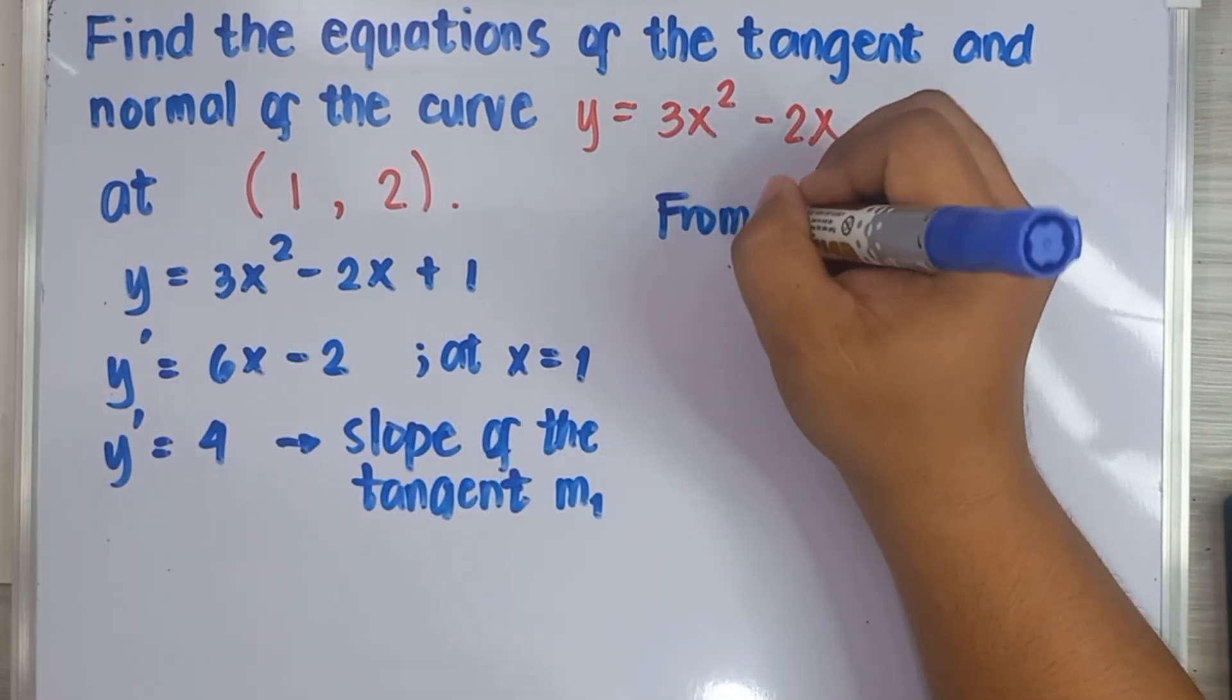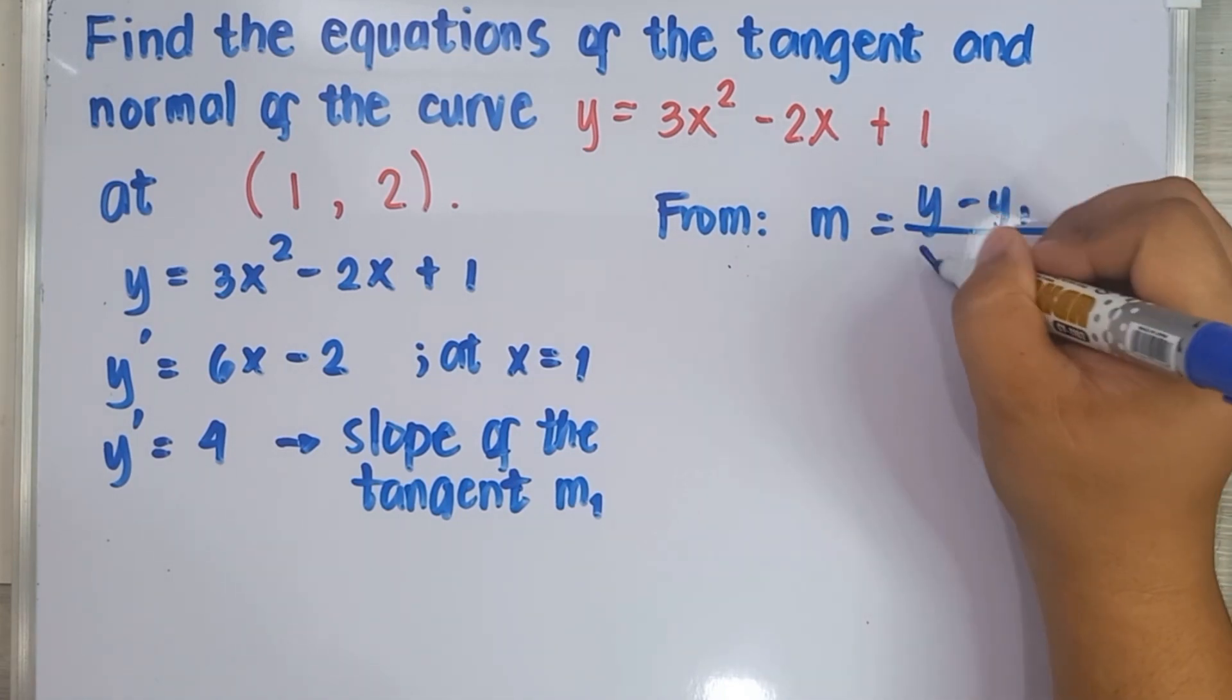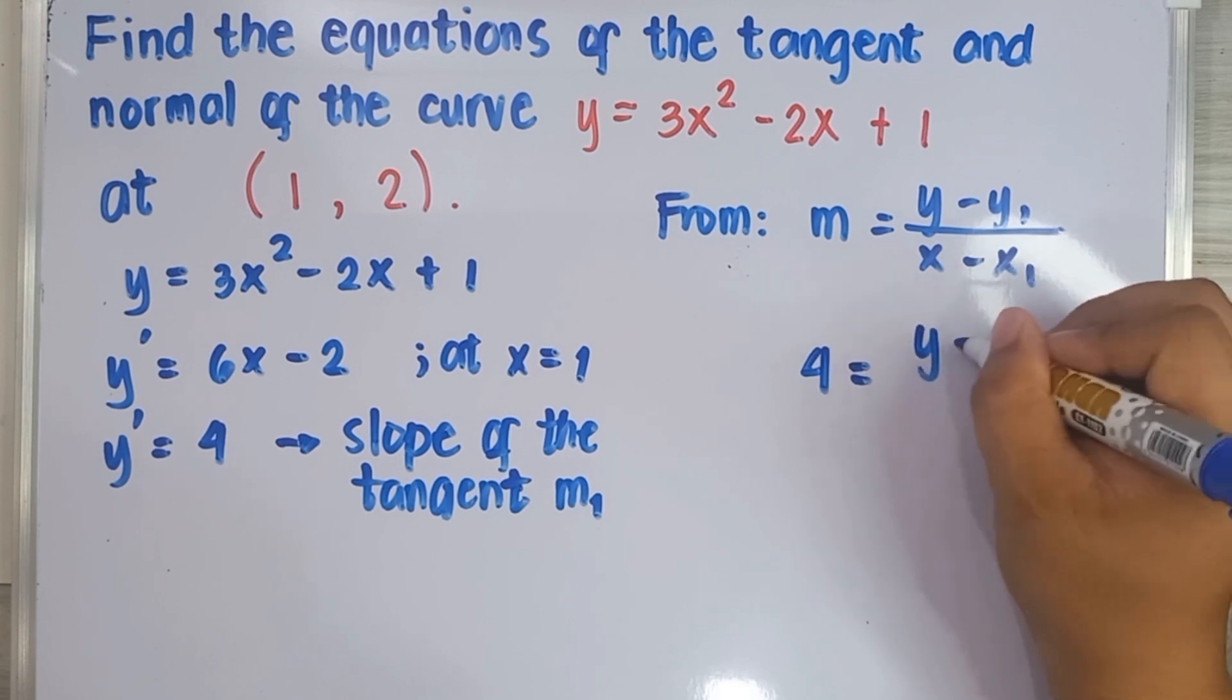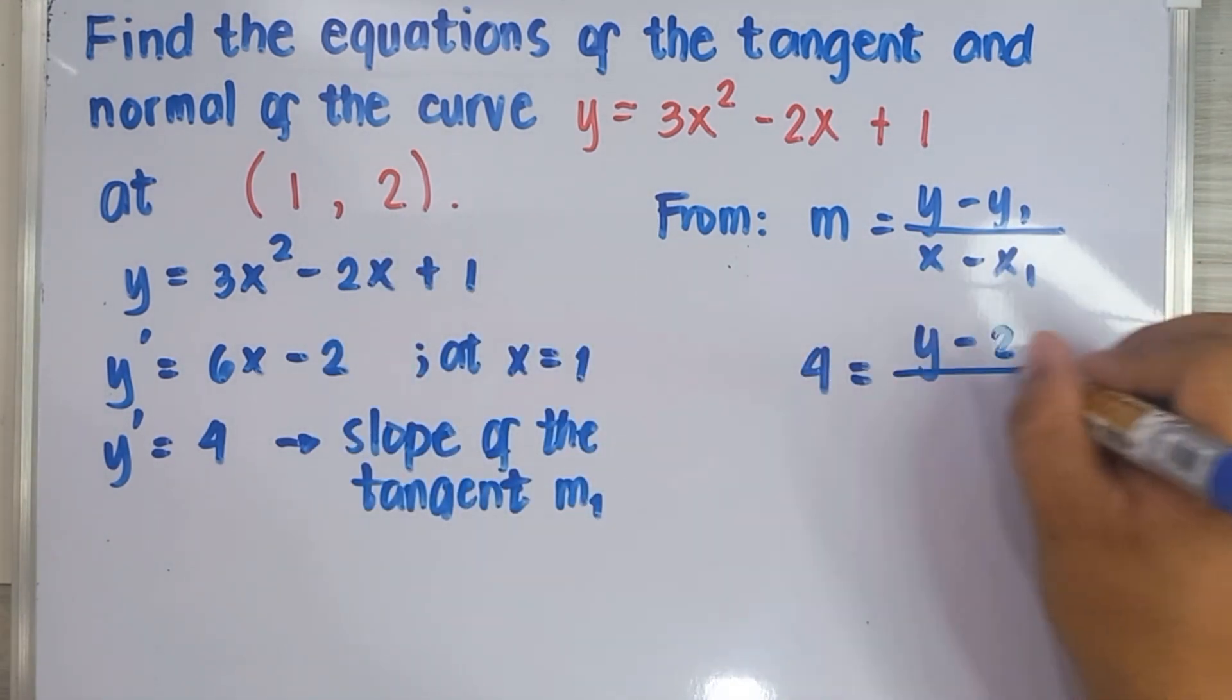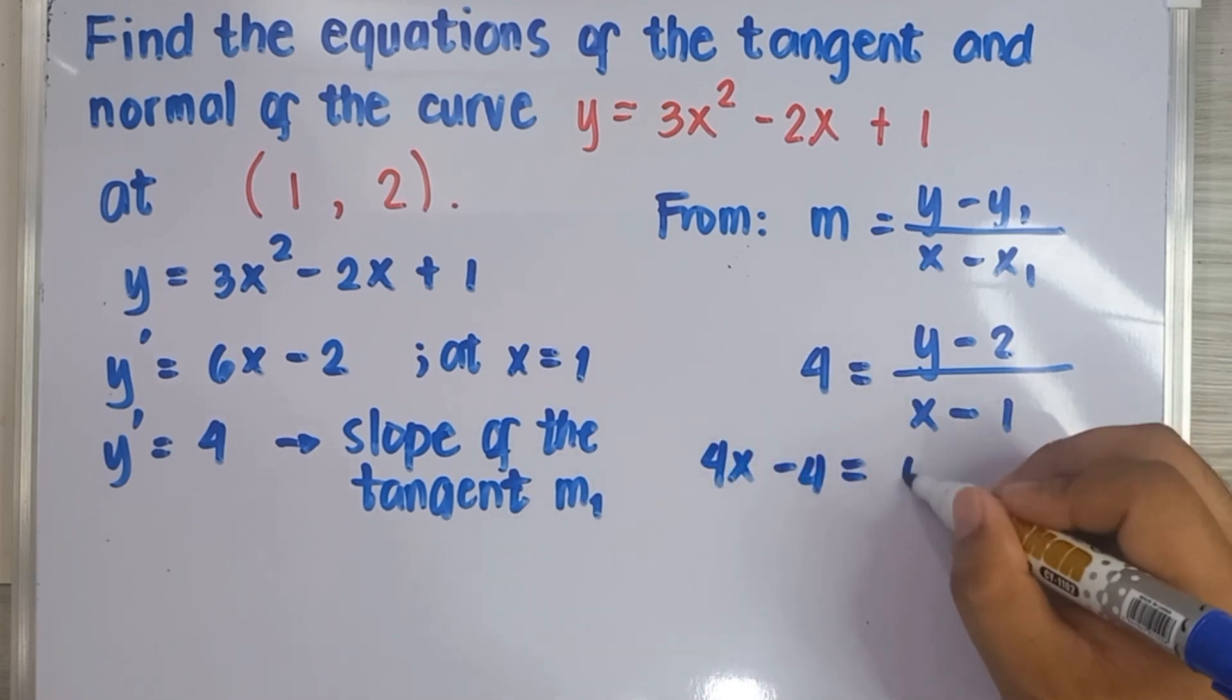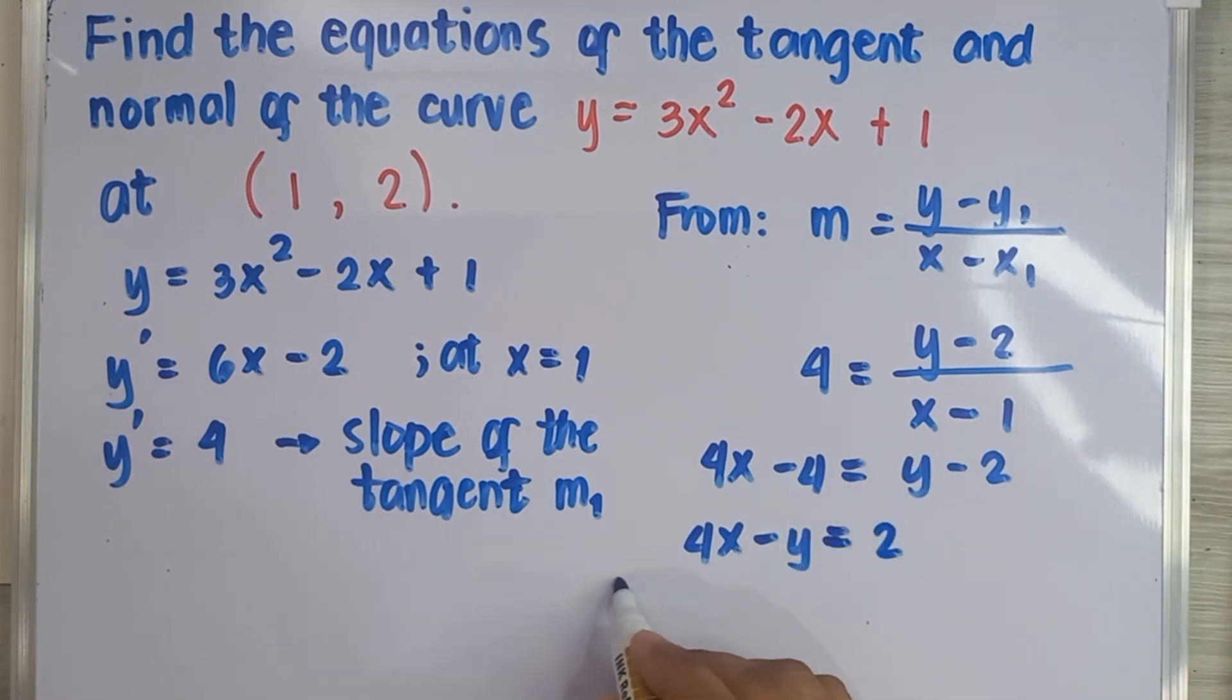Now we can solve the equation of the tangent by using point-slope form. Substitute the values: 4 equals y minus 2 over x minus 1. And here's the equation of the tangent.